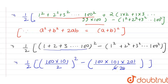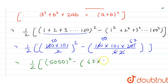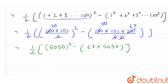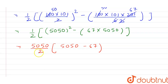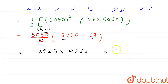Solving this further, 100 into 101 into 201 upon 6 equals 338350, which we simplify as 67 into 5050. So this becomes one-half into 5050 squared minus 67 into 5050. Taking 5050 common, we get 5050 upon 2 into (5050 minus 67), which gives 2525 into 4983, and this equals 12582075.